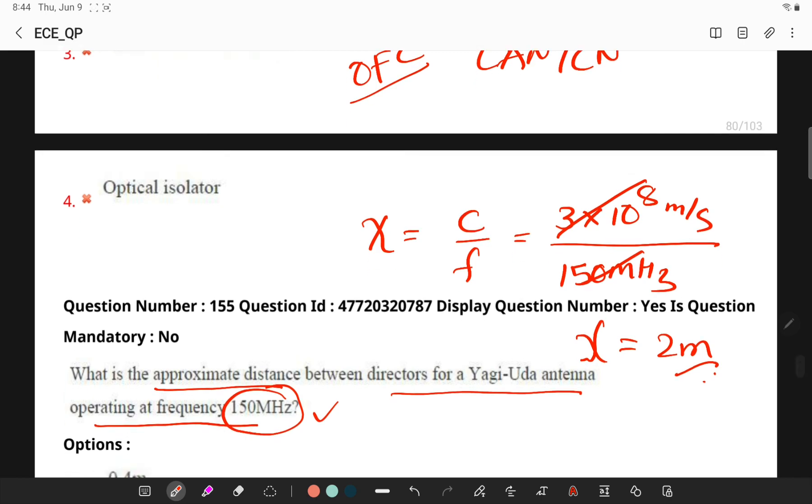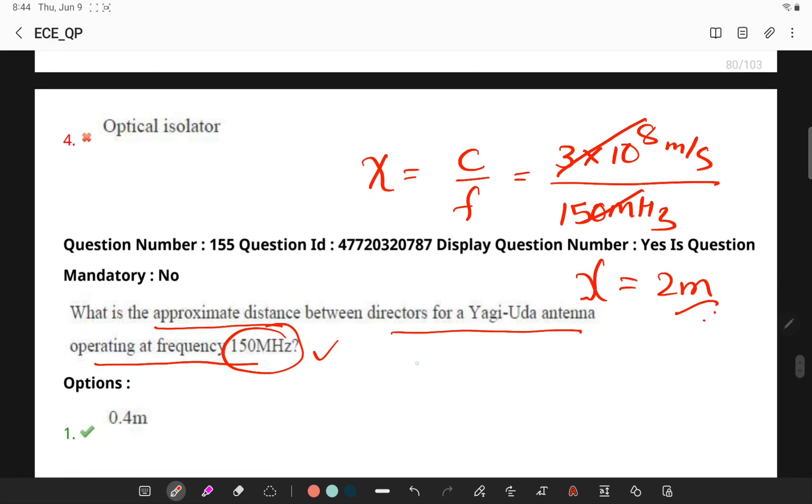Now remember the distance between directors of Yagi-Uda antenna is given by 0.2 lambda and here lambda is 2 meters, which means 0.2 into 2 is nothing but 0.4 meters. So try to remember this particular formula. With this, the questions related to advanced communication systems are completed in 2021 question paper.